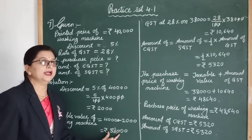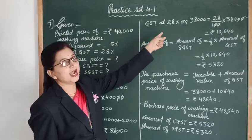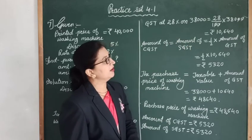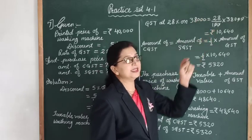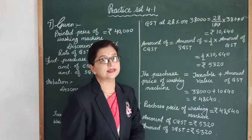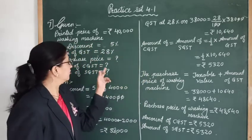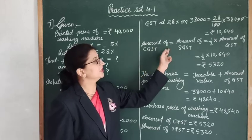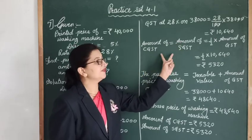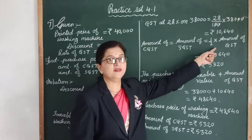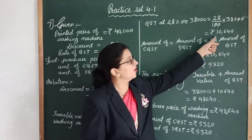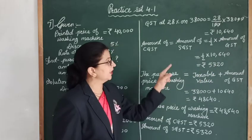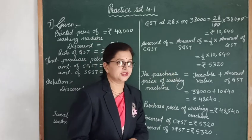We charge 28% GST on 38,000 rupees. GST = 28/100 × 38,000 = 10,640 rupees. Since CGST equals SGST and both are half of the total GST, half of 10,640 is 5,320 rupees. So CGST is 5,320 rupees and SGST is 5,320 rupees.